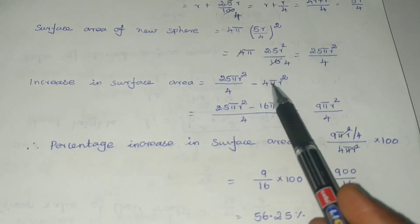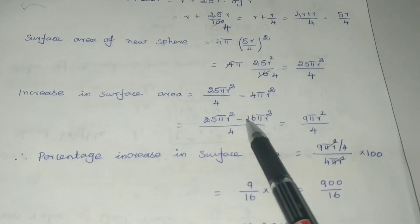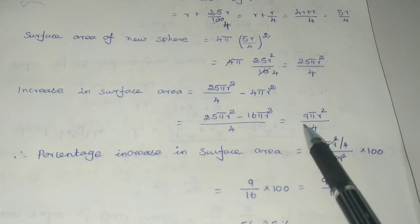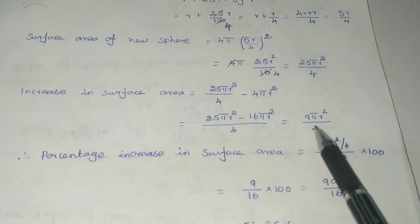Increase in surface area equals 25πR²/4 minus 4πR². Taking LCM: 25πR² minus 16πR² divided by 4. This equals 9πR²/4.